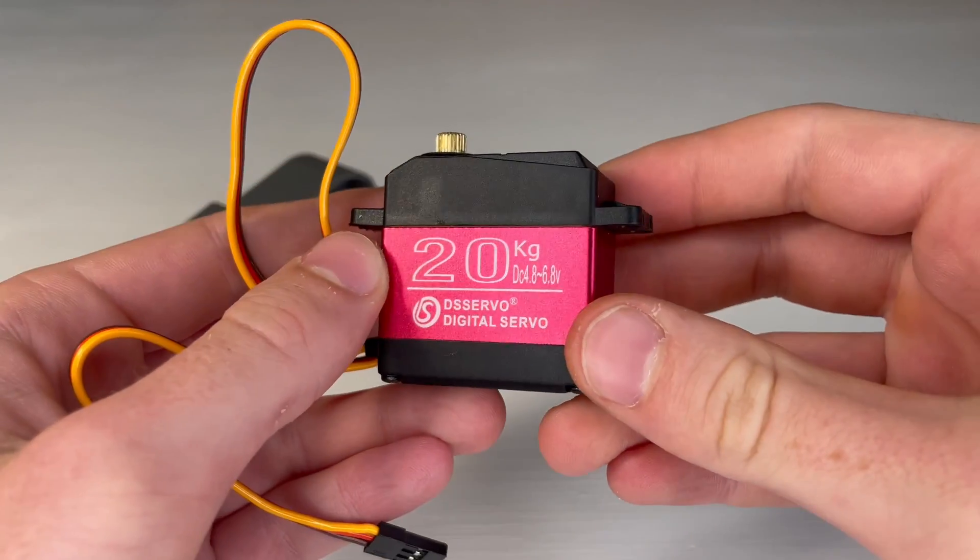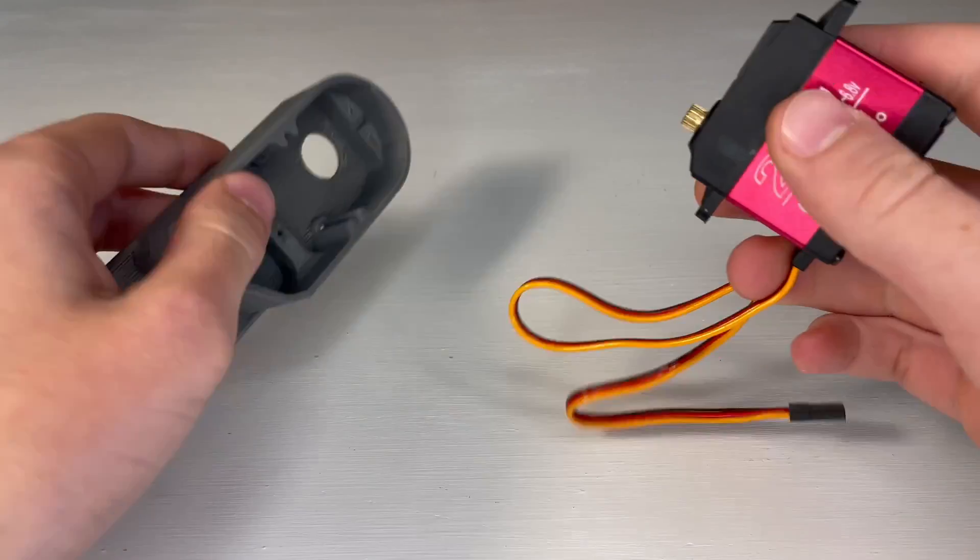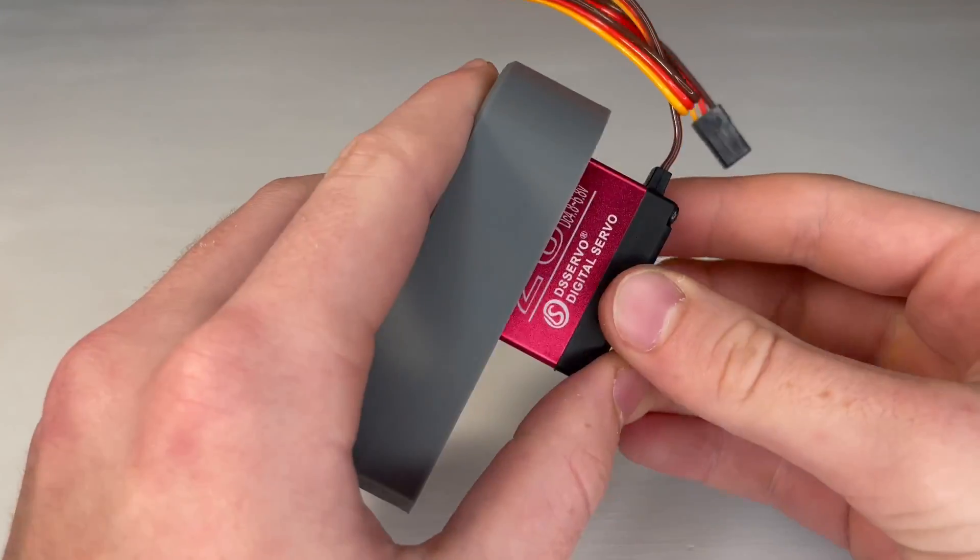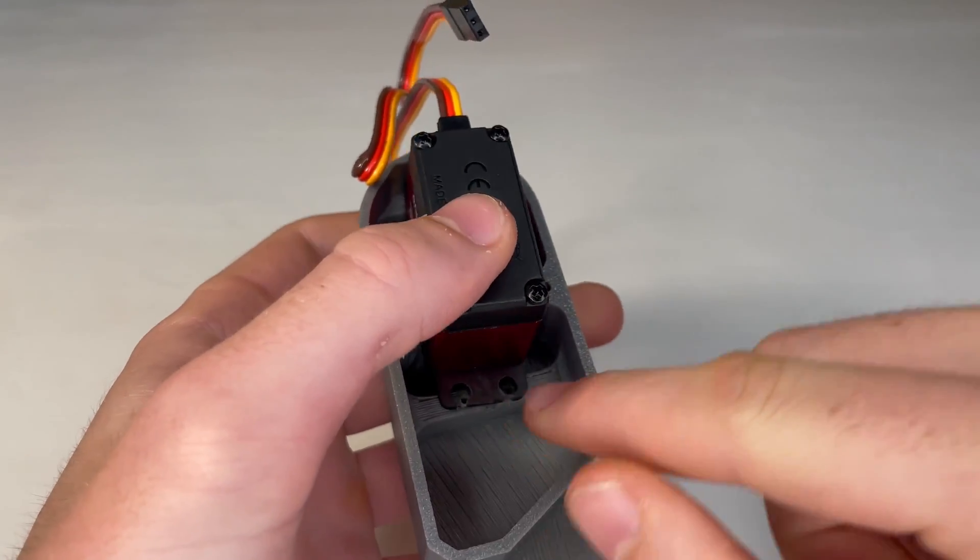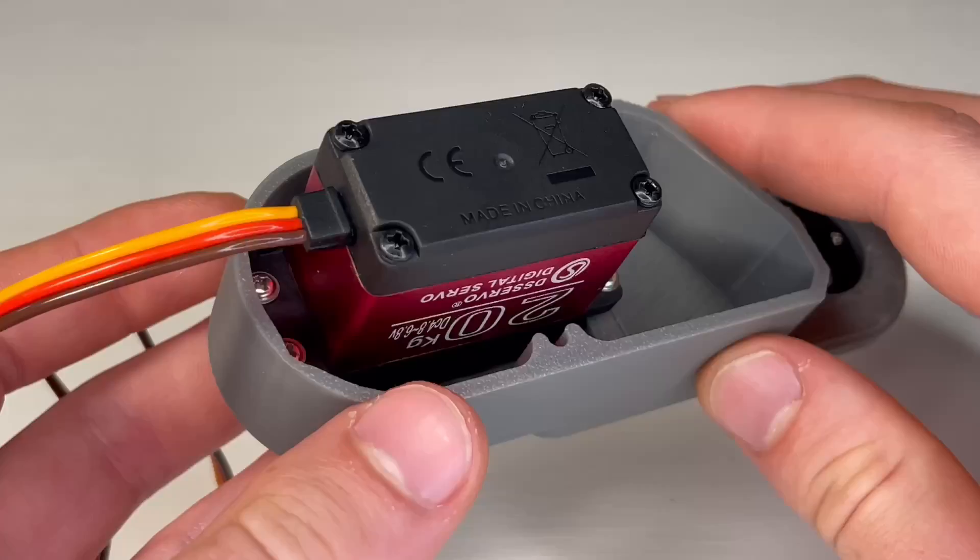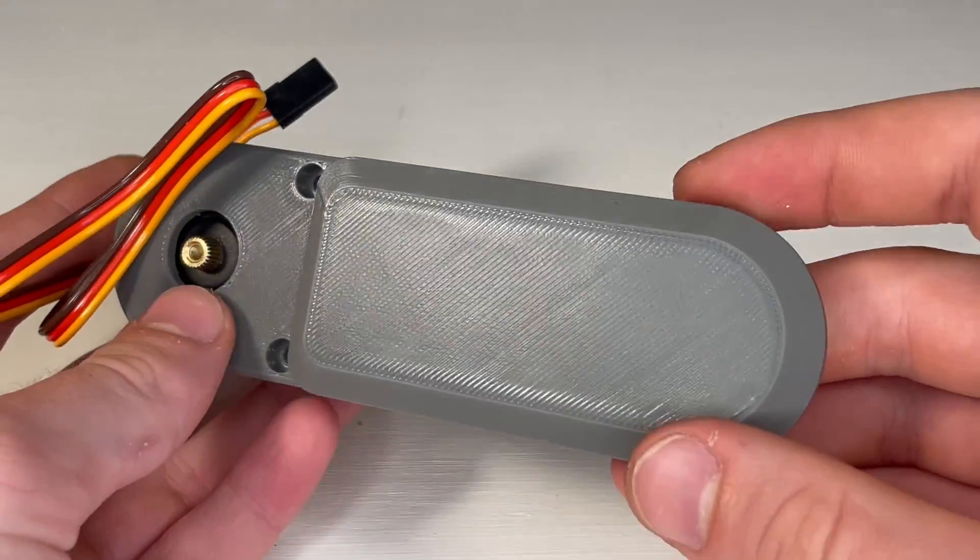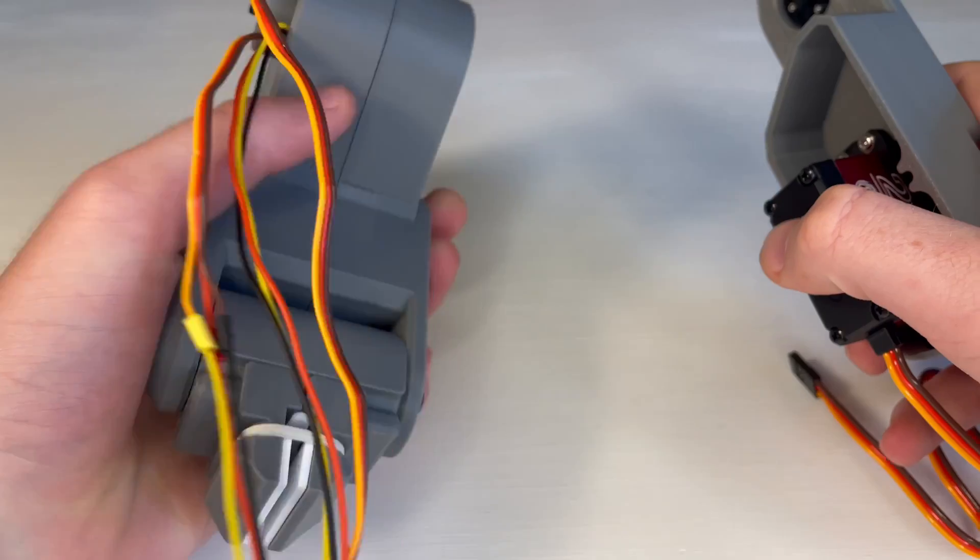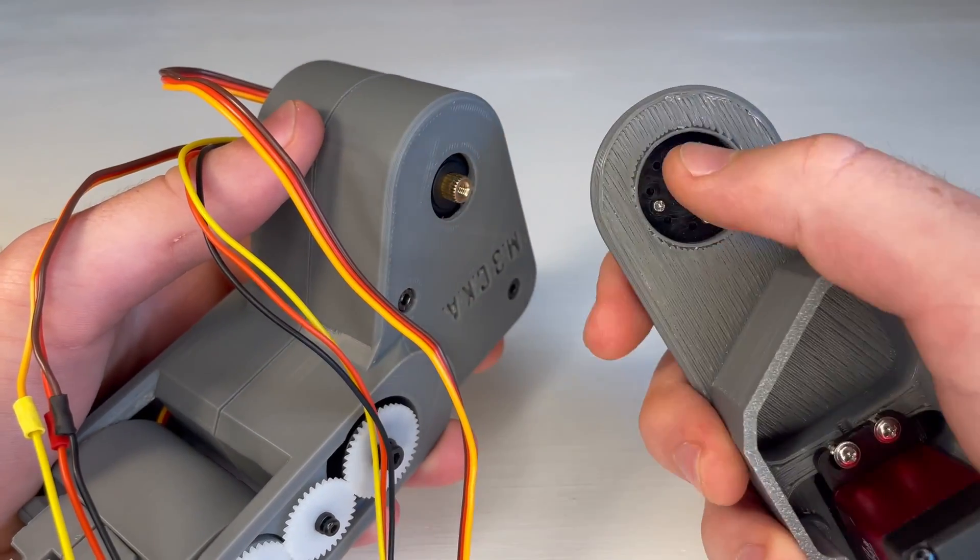And now we will screw our 20kg servo into the main arm. And we'll be using those same four screws from the servo bag. And now we'll press that servo horn onto our last assembly.